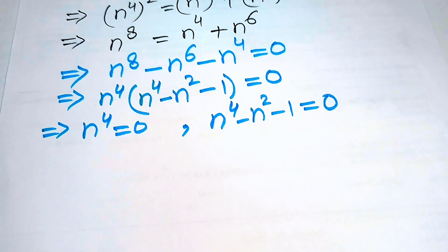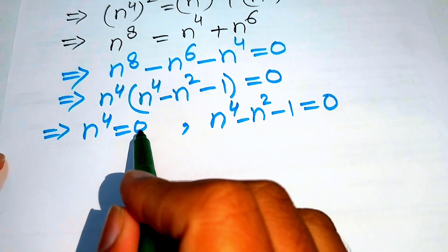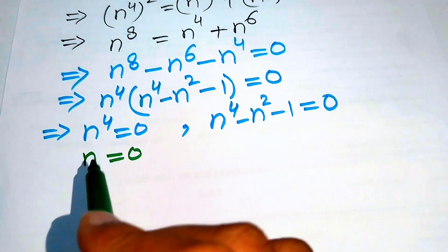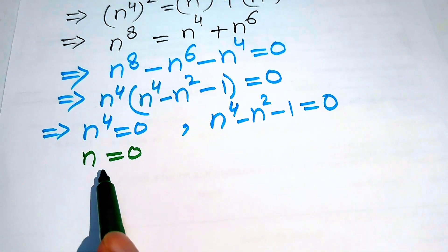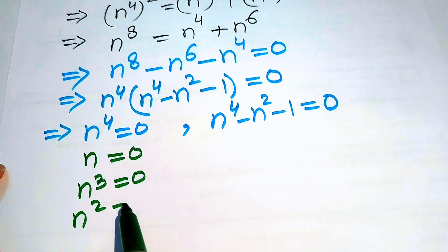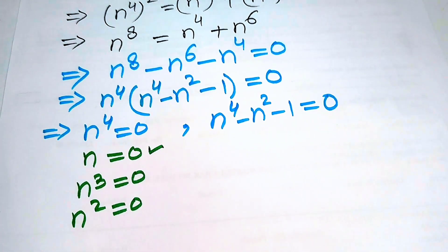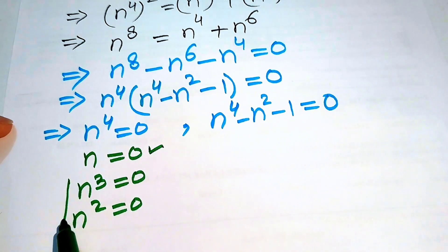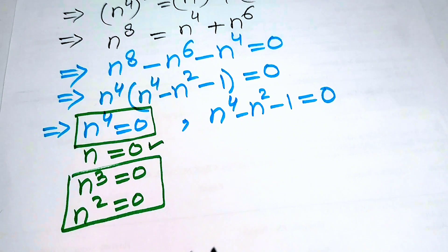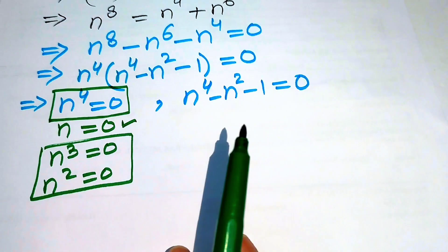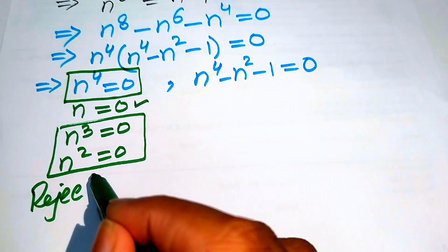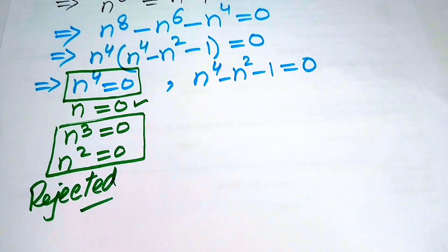In Case 1, n to the power of 4 equals 0, so n equals 0. When we take the square and cube of n, we get n squared equals 0 and n cubed equals 0. This means all three sides of the triangle become 0, so no triangle exists. We reject this case.